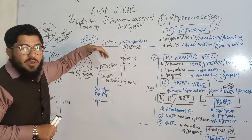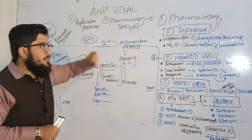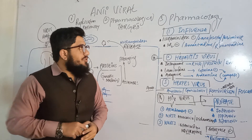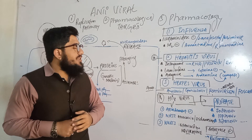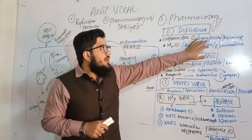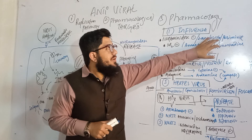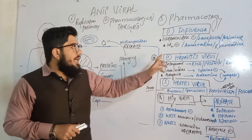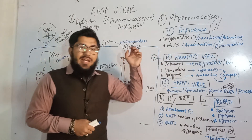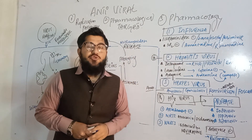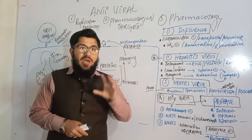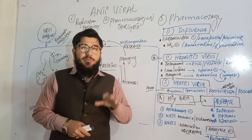In the neuraminidase inhibitor class, we have zanamivir, oseltamivir, and peramivir. In the M2 inhibitor class, we have amantadine and rimantadine. These drugs are used to treat influenza virus infection.